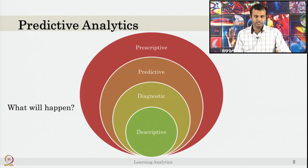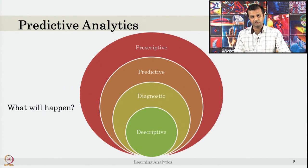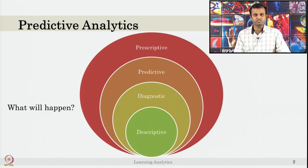When we say predictive analytics, it means it will measure what will happen next. Diagnostic analytics is what happened and why it happened. Predictive analytics is what will happen. If you know diagnostic analytics, you can create a relationship between dependent and independent variables.